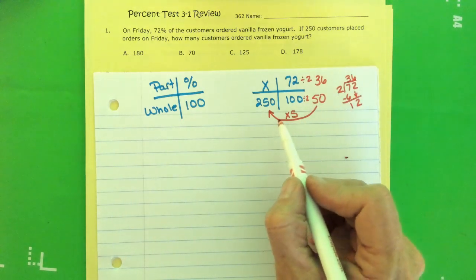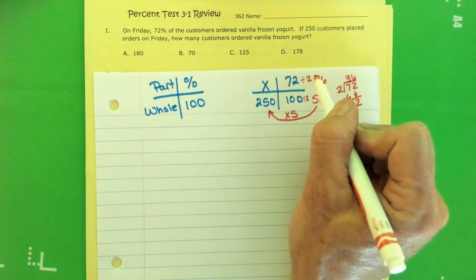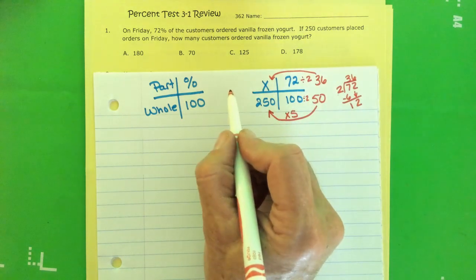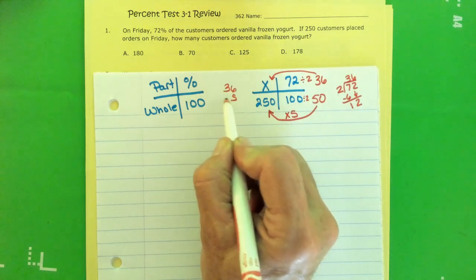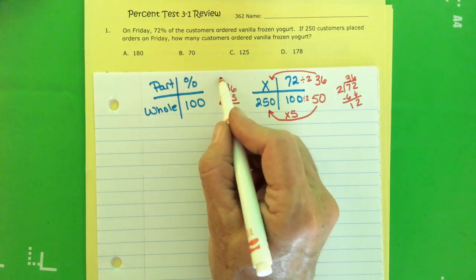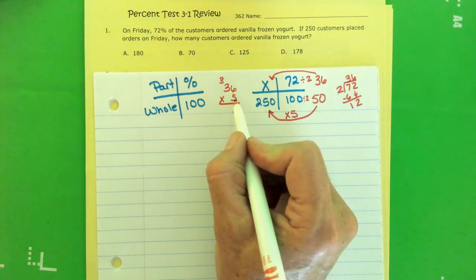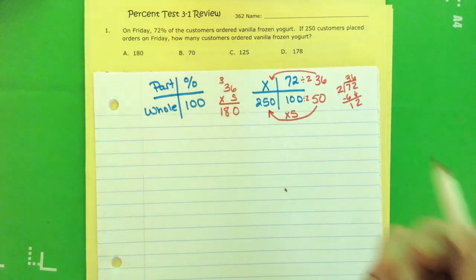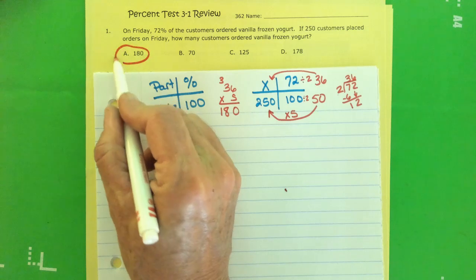Now to travel across this way, I had to get five times bigger. So I'm going to have to take my 36 and times it by five. 36 times five. Six times five is 30, carry the three. Three times five is 15 plus three more, 18. So my answer in that blank is 180.